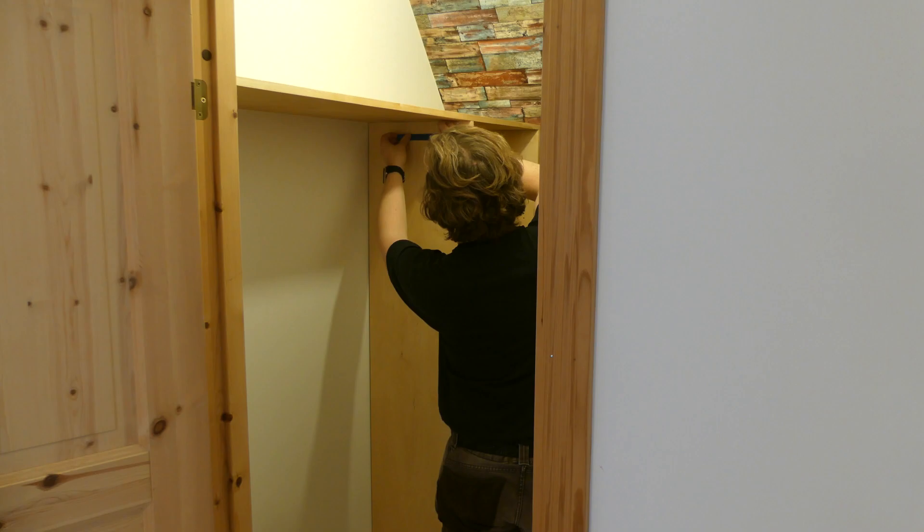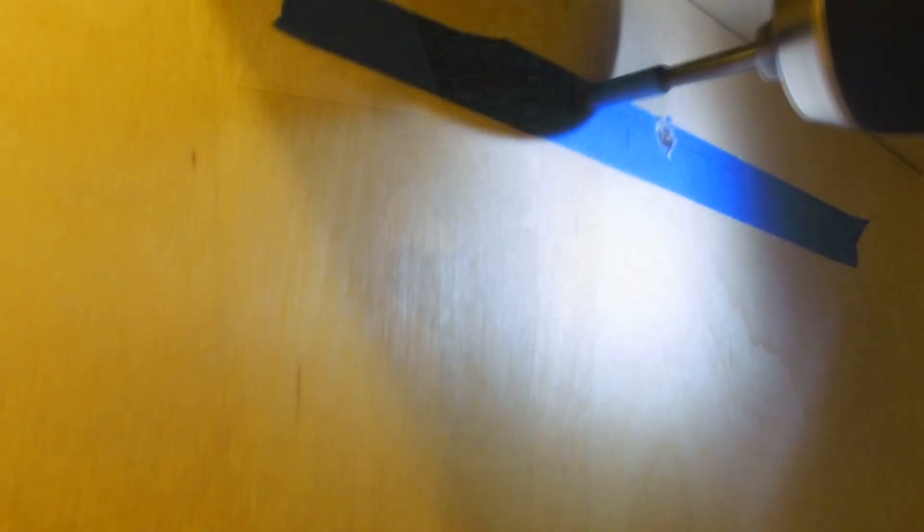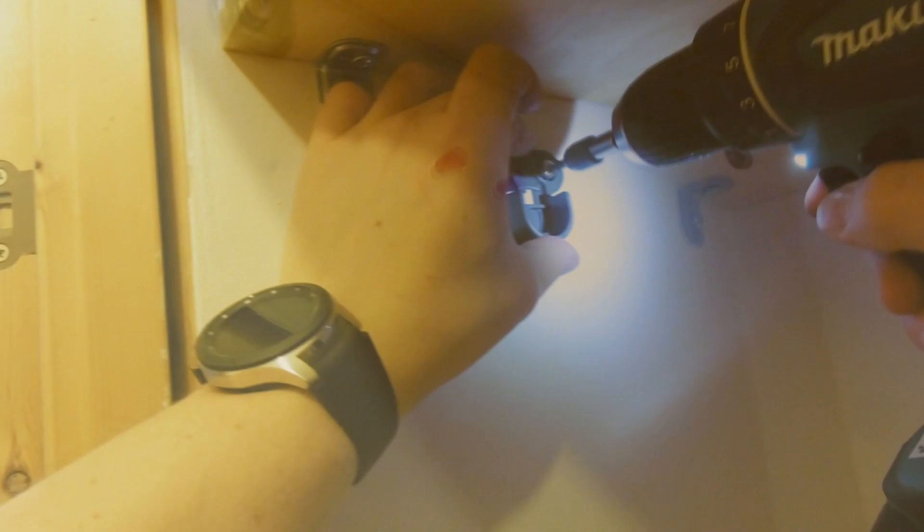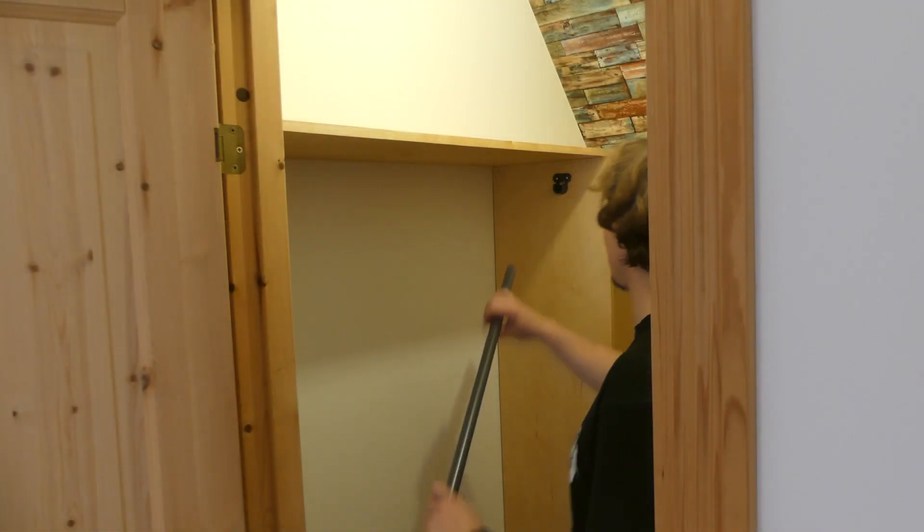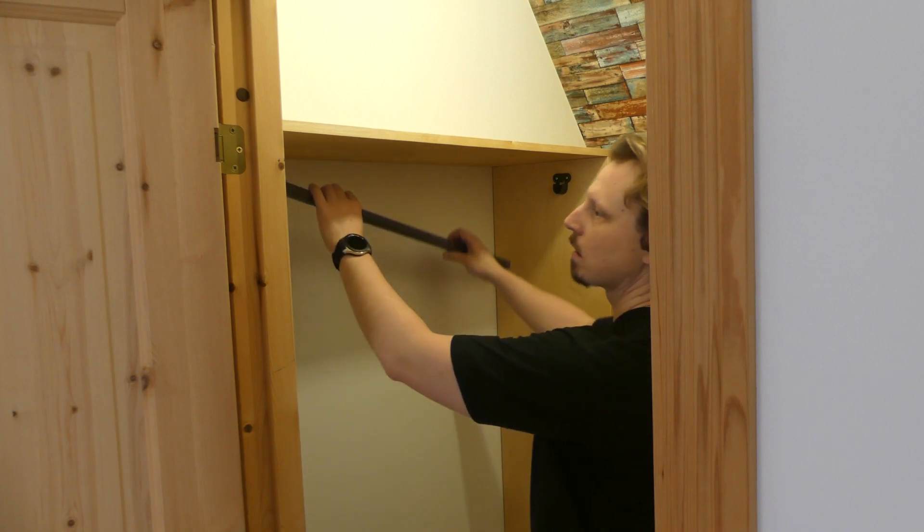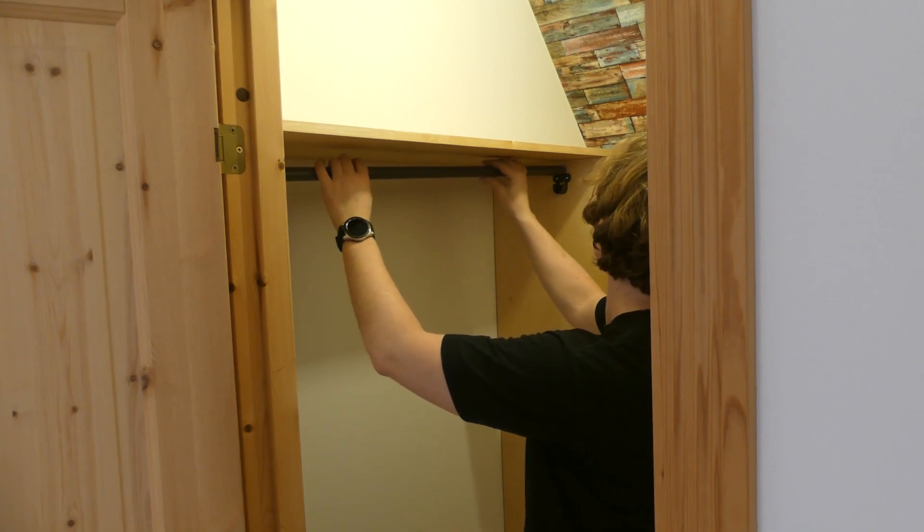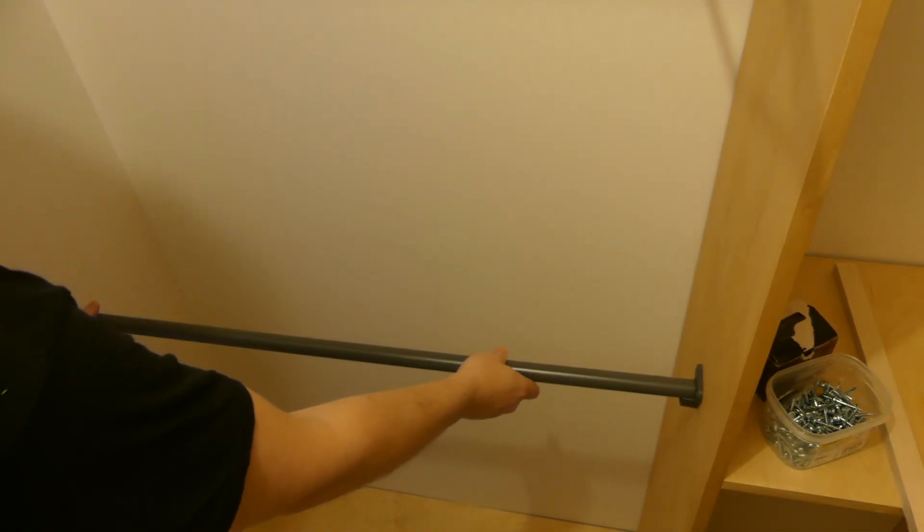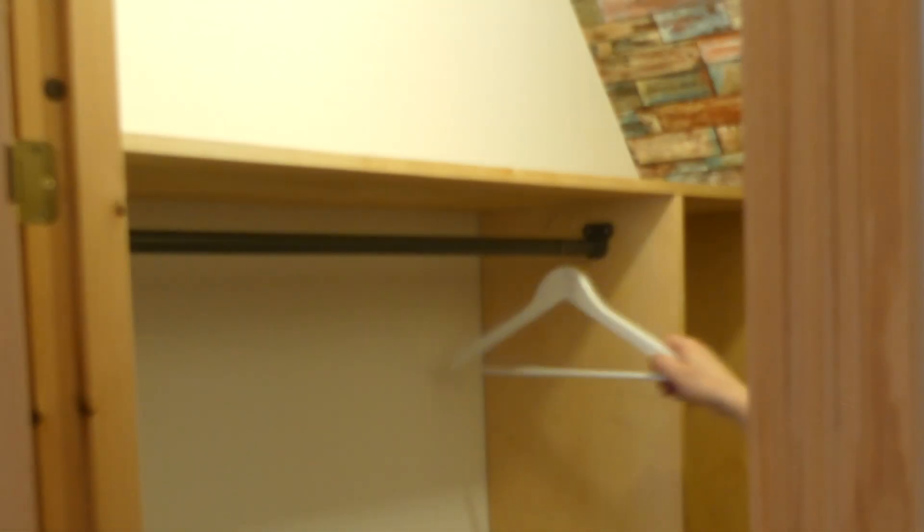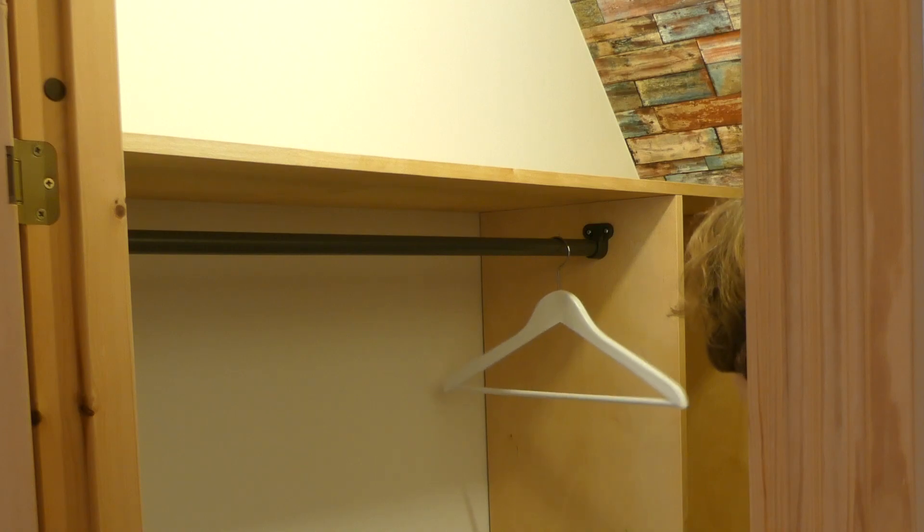Next up was the brackets for the clothing rail. And I marked the location with some masking tape, which also prevents tear out when drilling the holes. Then it was just to mount the brackets. And from the other side I had to drill, use anchors, and could then mount the bracket. The rail for the hangers was then just to snap in place. And then repeat for the bottom one. Just testing the functionality and it was good.